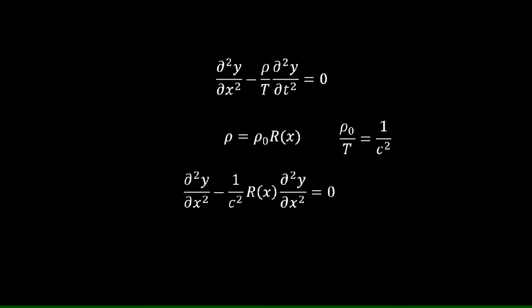But we are still not done yet. We want to convert this partial differential equation into an ordinary differential equation. To do that, we do something called separation of variables, where we can write Y, which is a two-variable function, as a product of two single variable functions. We can apply this idea only if the differential equation is homogeneous.